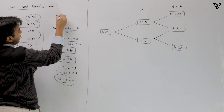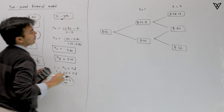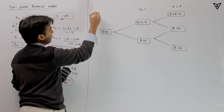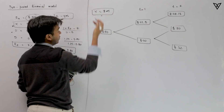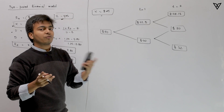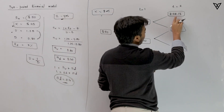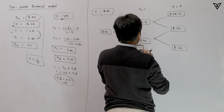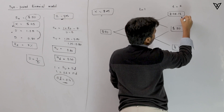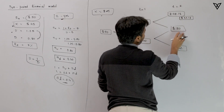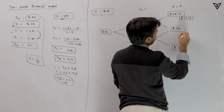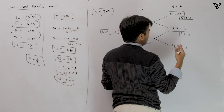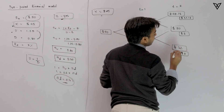We are looking at a European call option with two years to expiration and an exercise price of $45. At time period 2, the payoffs are: for a stock price of $78.13, the payoff is 78.13 − 45 = $33.13; for a stock price of $50, the payoff is 50 − 45 = $5; and for a stock price of $32, since it's below the exercise price, the payoff is $0.